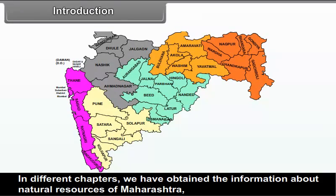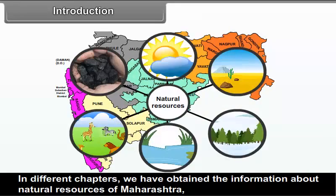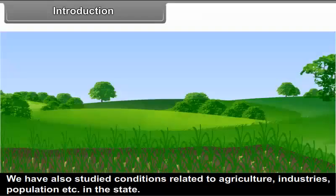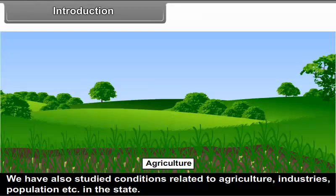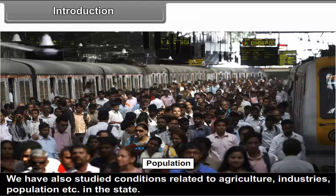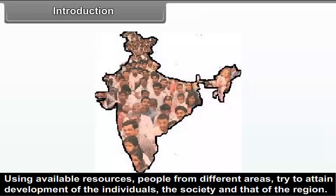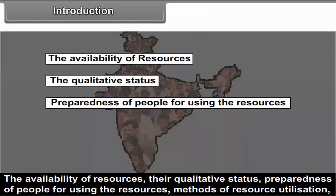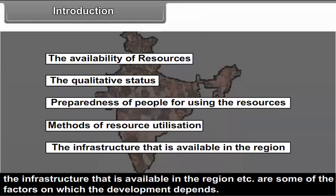In different chapters, we have obtained information about natural resources of Maharashtra, their distribution and utilization in different parts of the state. We have also studied conditions related to agriculture, industries, population, etc. in the state. Using available resources, people from different areas try to attain development of individuals, the society and the region. The availability of resources, their qualitative status, preparedness of people for using the resources, methods of resource utilization, and the infrastructure available in the region are some of the factors on which development depends.